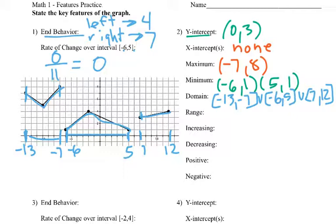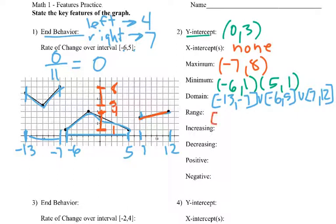Range deals with our y-values, so our lowest point is here at 1, and it goes up to 4. This one's within that zone, so we don't need to deal with it. It stops, takes a jump up at 5, and then goes up to 8. So our range would be 1 to 4, then jumps, 5 to 8.